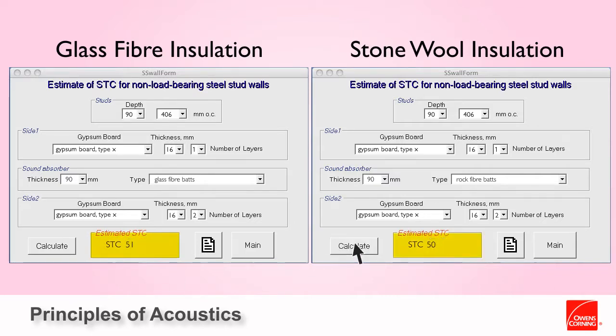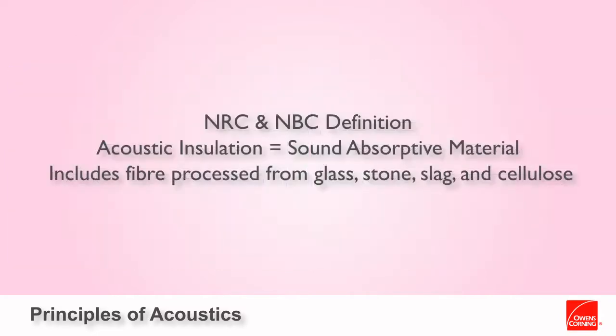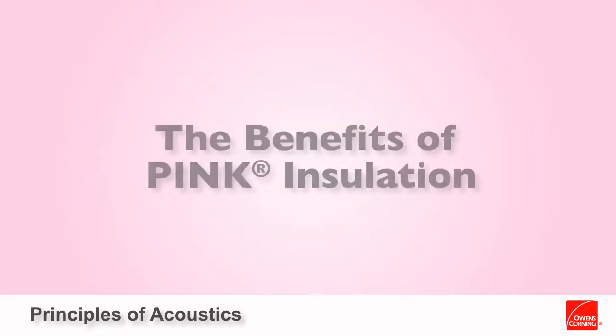This example illustrates that when designing wall or floor partitions, density does not play an important factor in determining the STC rating. This is why the National Research Council of Canada and the National Building Code of Canada define acoustical insulation as sound absorptive material, including fibers processed from glass, stone, slag and cellulose.